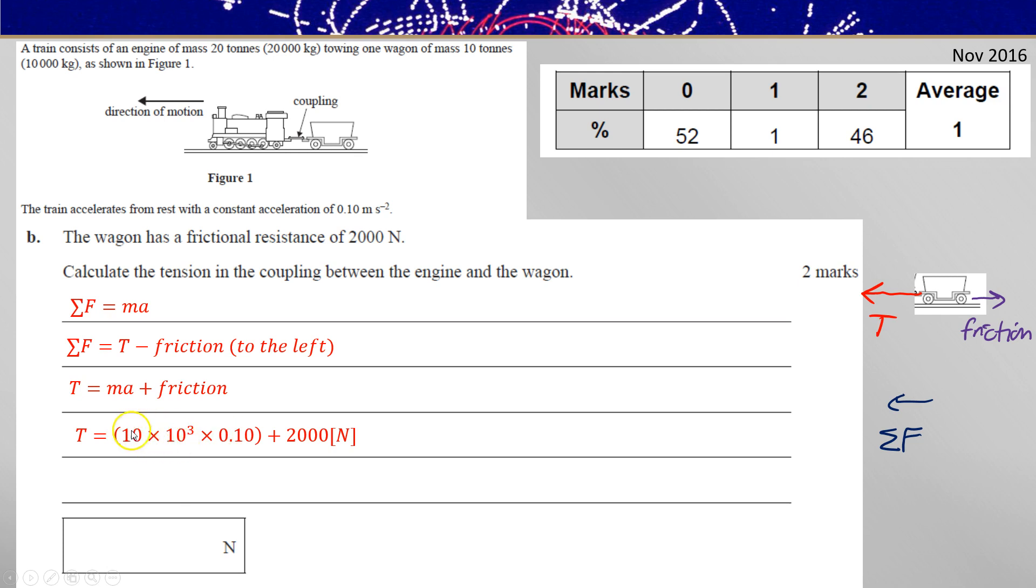And so now we can calculate the tension in the wagon. So MA taking the mass of the wagon and the acceleration of the whole system because they're connected plus 2000 newtons friction gives you 3000 newtons for the tension in the coupling.